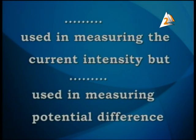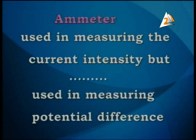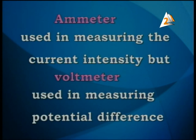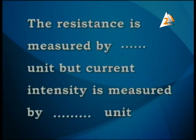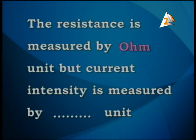The ammeter is used to measure the current intensity, while the voltmeter is used to measure the potential difference. The resistance is measured in ohms. The current intensity is measured in amperes, because electric current intensity uses the ampere as its unit.